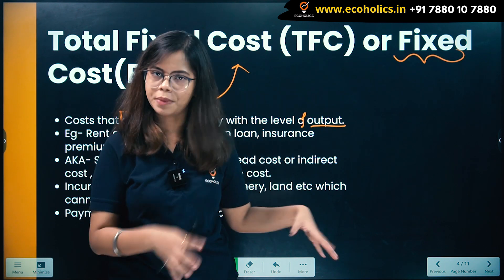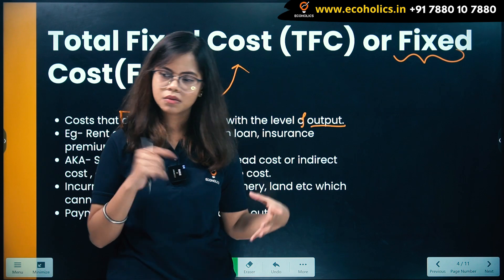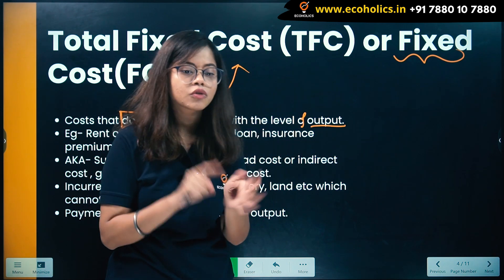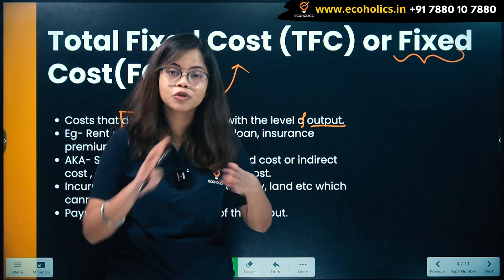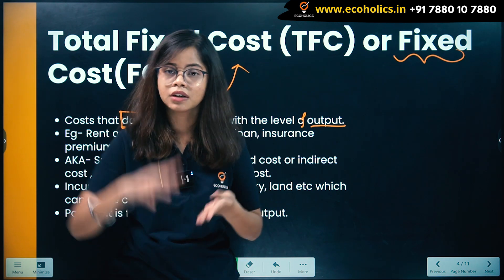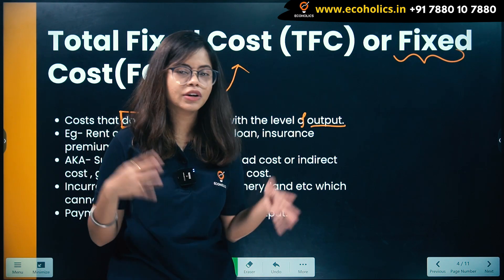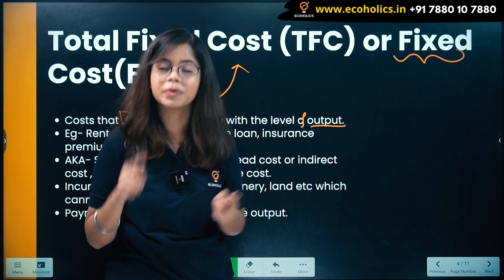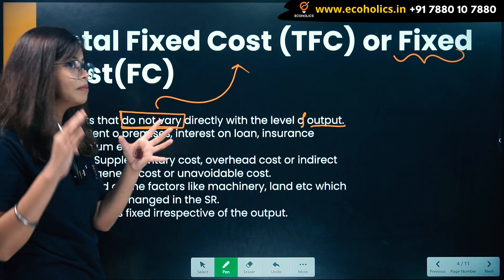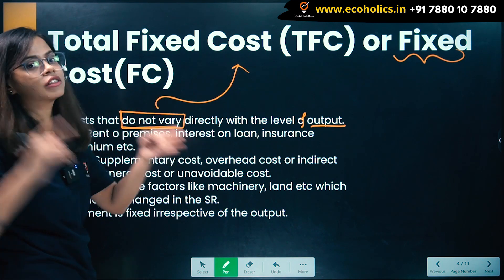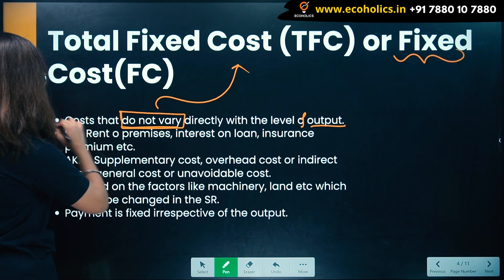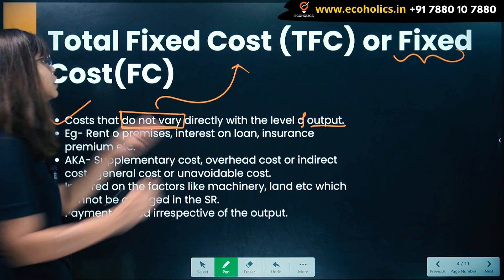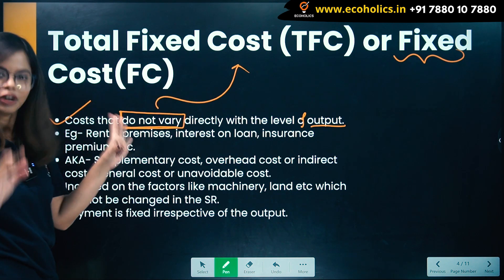You have to pay the rent for that shop — by that you can relate to fixed cost. So the first thing: cost that does not vary directly with the level of output is known as your fixed cost.